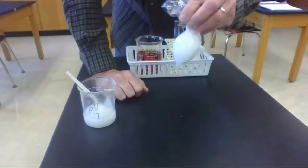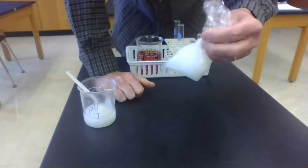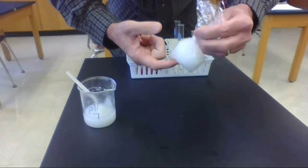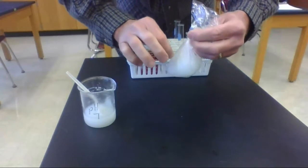Now, the idea is, this is the model of a cell. So ask yourself, if this is a model of a cell, what does the baggie represent? And what does the starch solution represent?